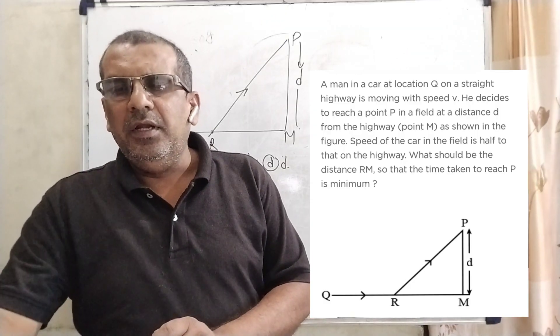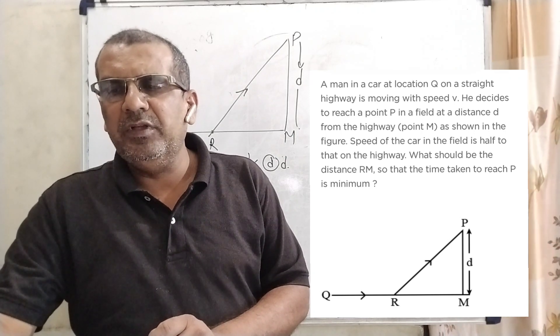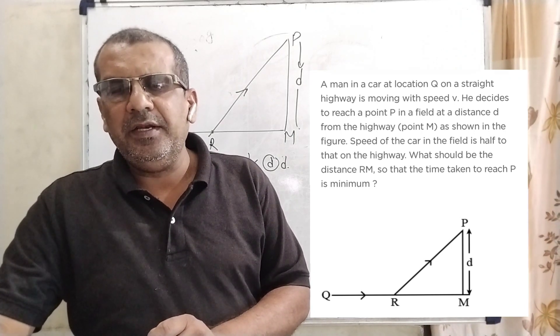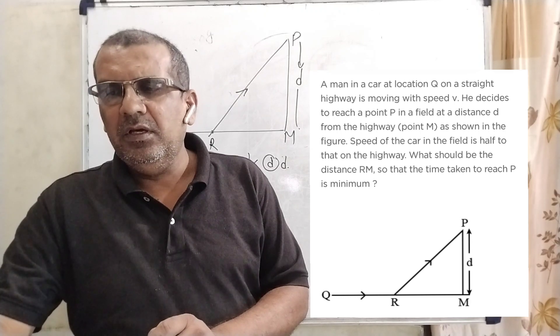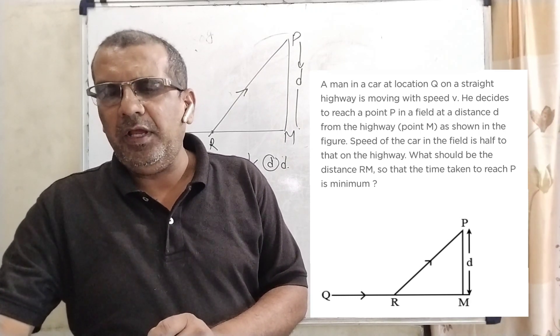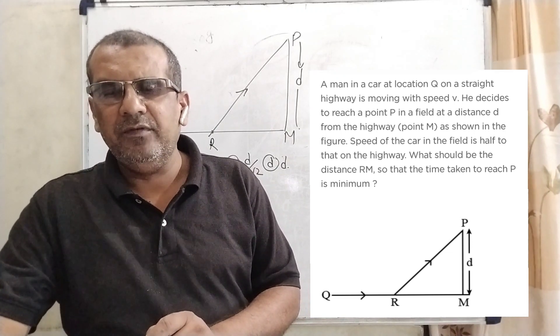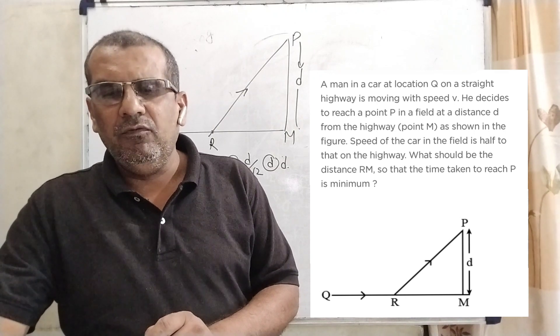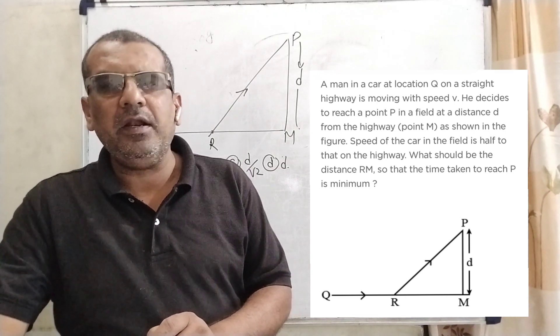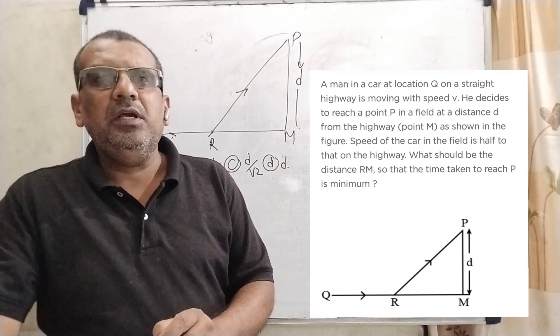A man in a car at location Q on a straight highway is moving with speed V. He decided to reach a point P in a field at a distance D from highway point M as shown in the figure. Speed of the car in the field is half to that on the highway. What should be the distance RM so that the time taken to reach P is minimum?